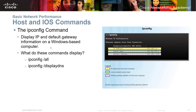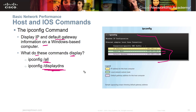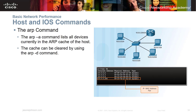The ipconfig command — I call it IP config for short — displays the IP and default gateway information on a Windows-based computer. Running ipconfig gives you basic information. Running ipconfig /all shows all of the IP configuration information, and ipconfig /displaydns gives you your DNS information — the DNS table built locally on that Windows machine.